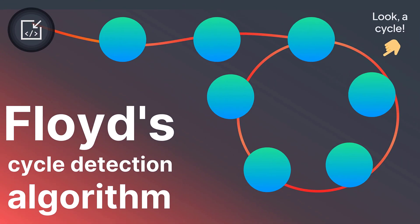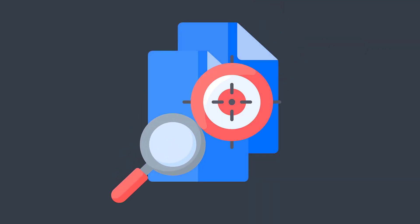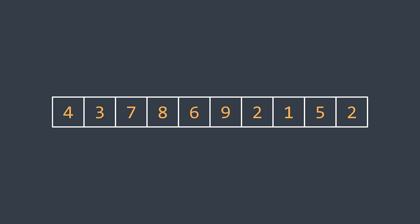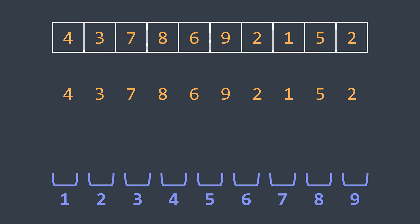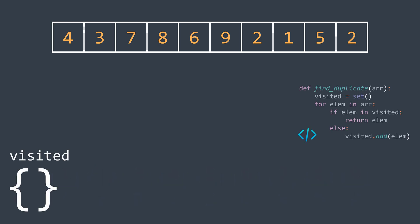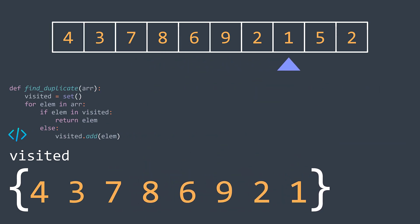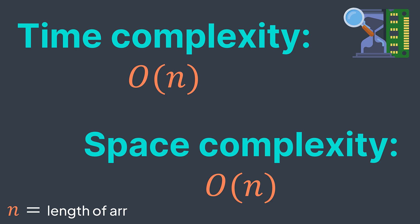Now we know the Floyd cycle detection algorithm — can we use it to solve all problems? Yes, we'll use it to solve the find-the-duplicate problem. We are given n+1 numbers between 1 and n inclusive and asked to find the duplicate number. There will always be a duplicate because of the pigeonhole principle: we have n+1 elements but only n possible values, so at least two elements must share the same value. We can solve this with a set of visited values, returning the first repeated value — giving O(n) time and space.